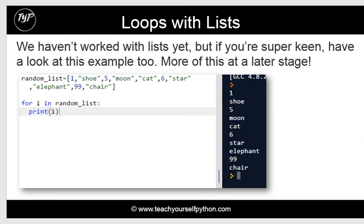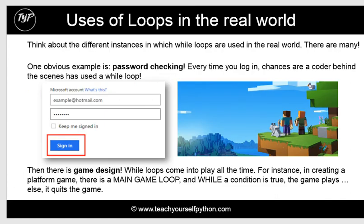We've not worked with lists yet, and as soon as you go through the solve and learn series on later stages, we will look at lists in great detail. But if you're super keen, you might want to have a look at this example too. This is a random list which contains different elements in it, such as one, two, five, moon, cat, etc. And this is a for loop which is printing all the elements in the list — incredibly useful, as you'll see.